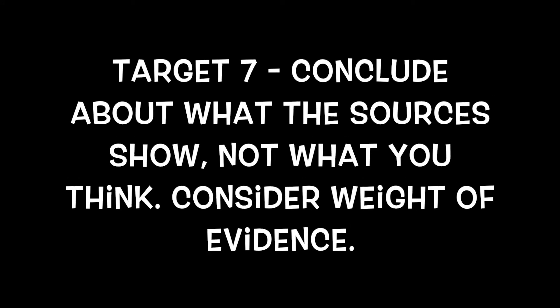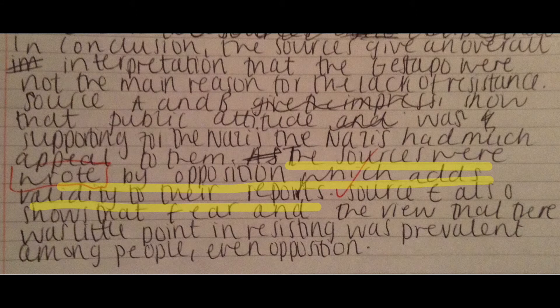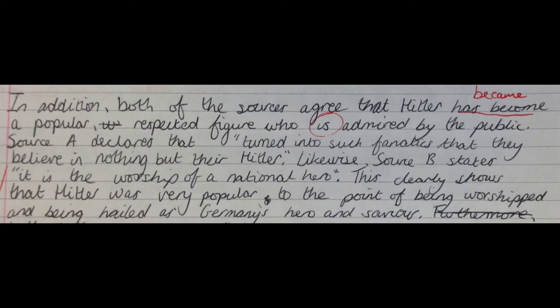Target 7: conclusions were a bit of a problem. Lots of you were just writing 'I think that' followed by the hypothesis. What you needed to do was state what the sources show in reference to the hypothesis. And if you want an A, you're going to consider the weight of evidence — not just the number of sources that show support, because what if four out of five sources support the hypothesis but they're all unreliable? You need to take into account how valuable those pieces of evidence are based on the provenance. Here's an example: it's not perfect, but you can see they've considered weight of evidence by referring to provenance, and they're clearly stating what the sources show, not just what they personally think about the hypothesis.